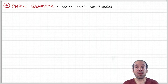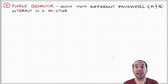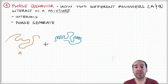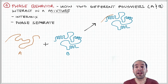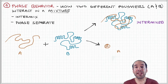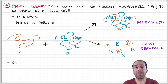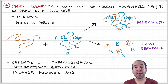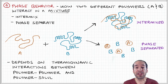Another way that we can classify different kinds of materials is in terms of their phase behavior. This refers to how different polymers might interact with each other in a mixture, or how they might interact with a solvent, or some combination of these interactions. This is important when you're trying to make blends of different kinds of polymers, or you're trying to dissolve a polymer in a solvent to produce something like a thin film or a sheet.